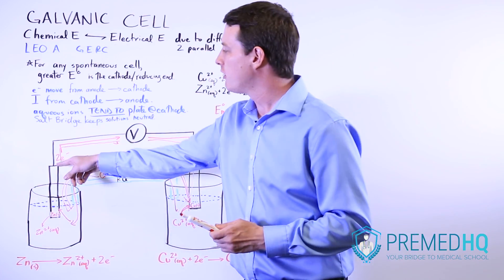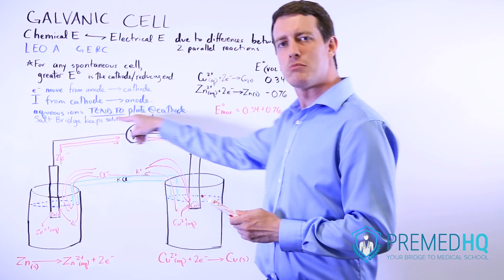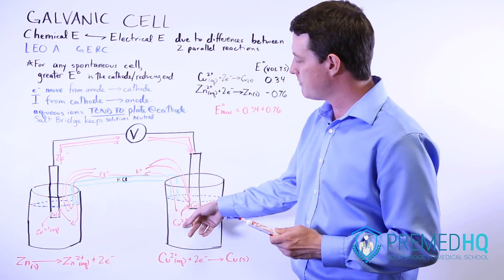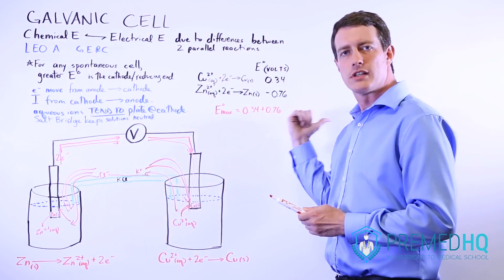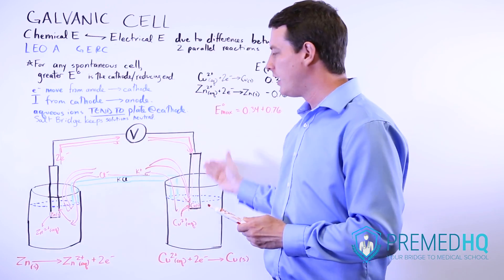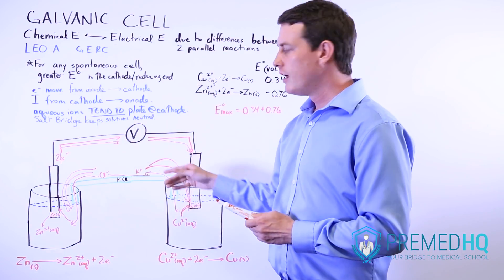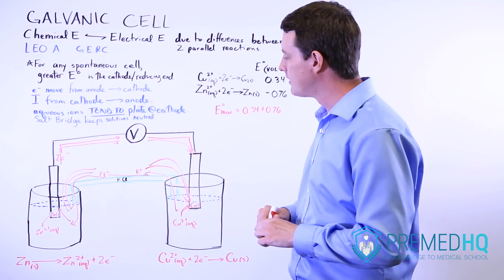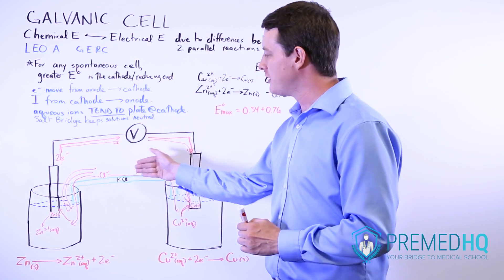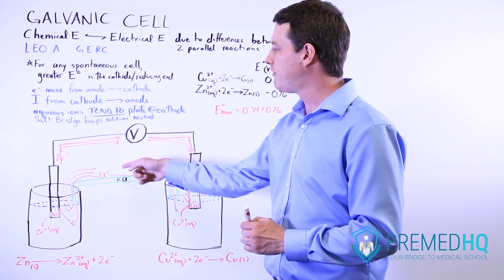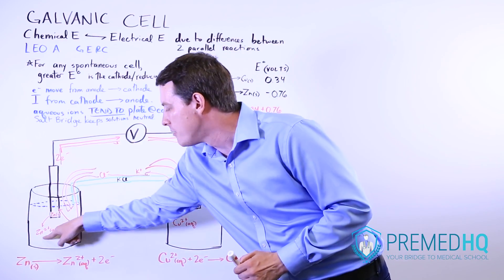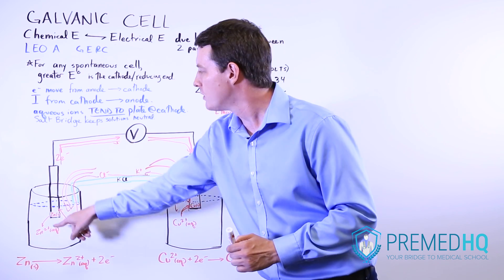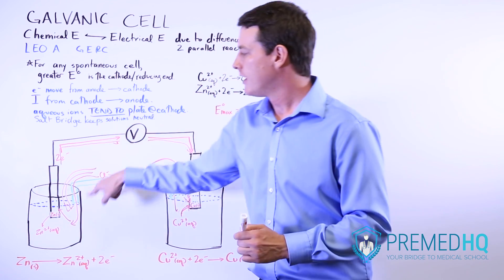With those ion movements accounted for, we've completed an entire circuit. Electrons flow from anode to cathode; that drives positive charges — copper cations and potassium ions — to move in complementary directions; and chloride ions compensate for the zinc cation gain at the anode. The result is a closed loop of negative energy flowing continuously through the system.